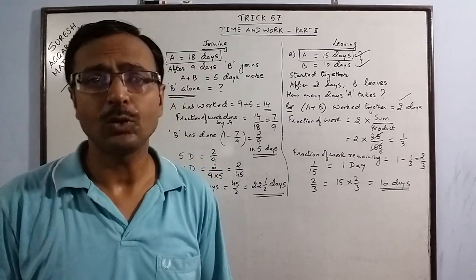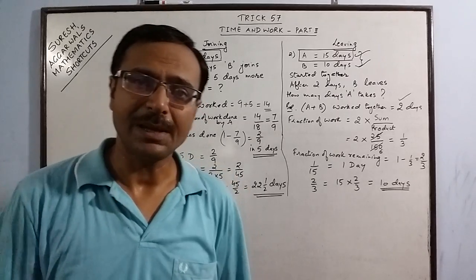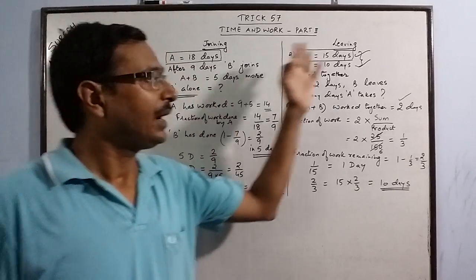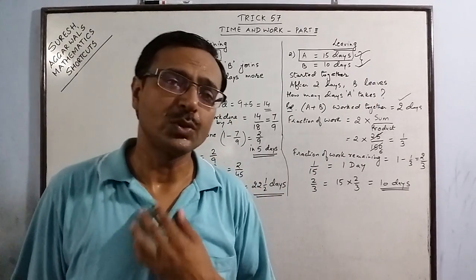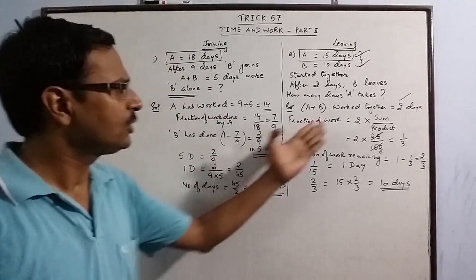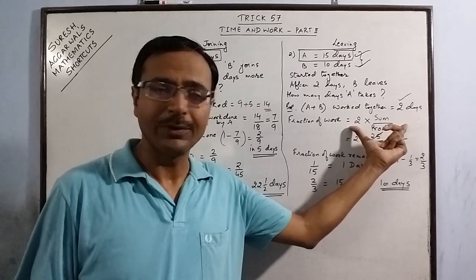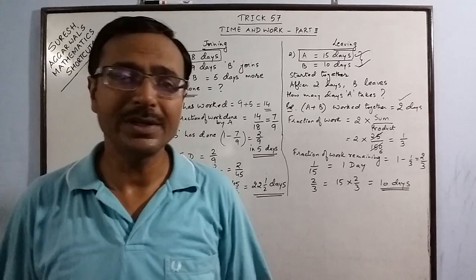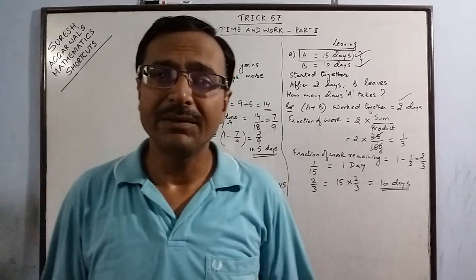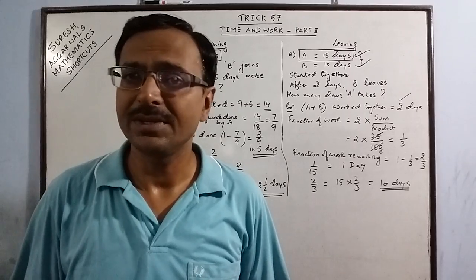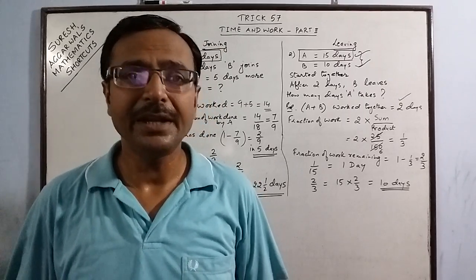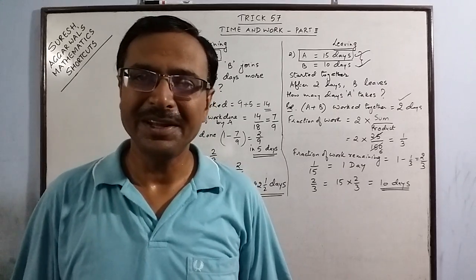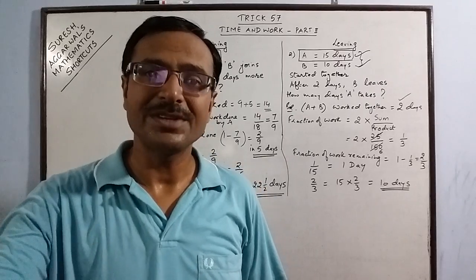These are two very important types of questions that are unavoidable in numerical ability tests — in NTSC exams, railway recruitment exams, and all competitive exams with a numerical ability section. You cannot avoid joining and leaving type problems. Please practice the three steps for joining and two basic steps for leaving. Give it one hour and practice 20 to 30 questions. I am sure you will be able to solve any time and work question in an exam. Keep learning, keep sharing, and subscribe to the channel if you like it.